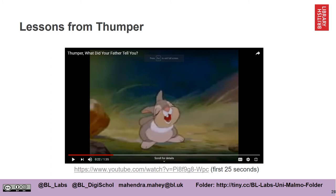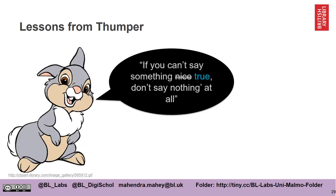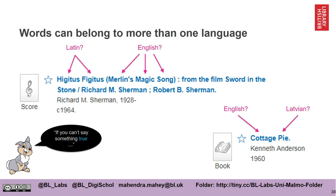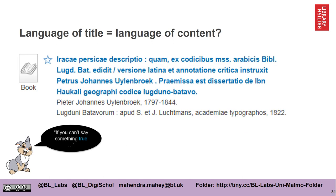There's a very important lesson we can learn. If you've seen the Disney film Bambi, I encourage you to look at the first 25 seconds of a YouTube video — there's a lesson from Thumper the rabbit that we're going to use in our work for describing metadata. And that is: if you can't say something true, don't say nothing at all. In the original Bambi film, Thumper says 'if you can't say something nice, don't say anything at all.' Sometimes words can belong to more than one language — for example, Latin and English. Some descriptions may be entirely in Latin, and we need to be careful about what language claim we make.